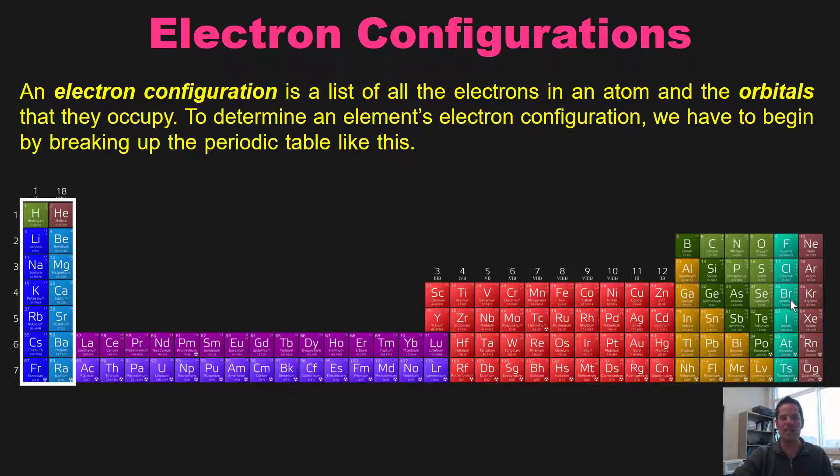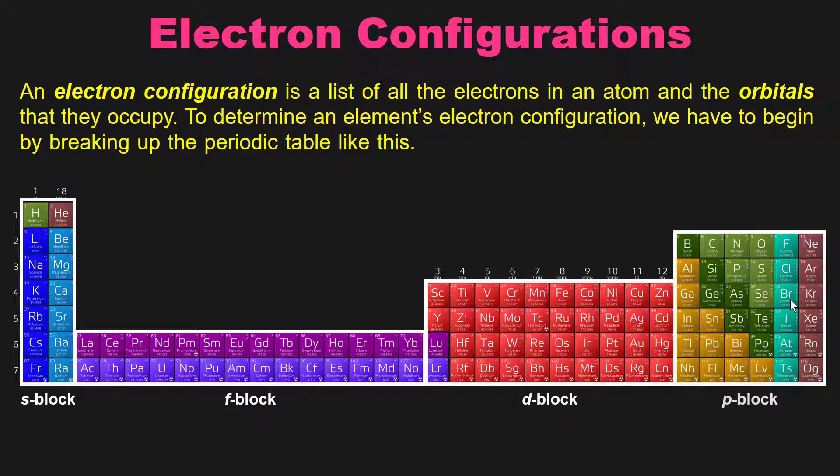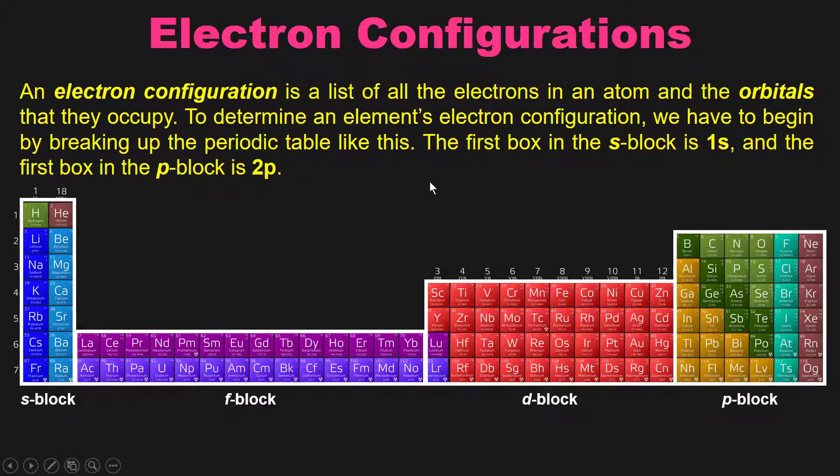As I've said earlier, this is the s block, this is the f block, this is the d block, and this is the p block. We then have to remember that the first box in the s block, this one right here, hydrogen, is 1s and the first box in the p block over here, boron, is 2p.